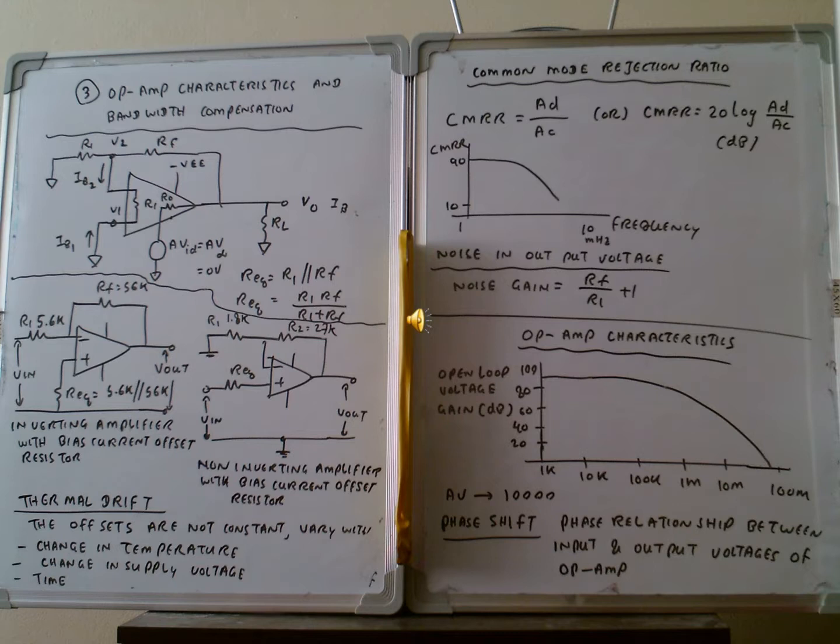The next topic is operational amplifier characteristics and bandwidth compensation. Bandwidth compensation is important when using operational amplifiers because of thermal drift. Thermal drift occurs due to electrical current and temperature changes, which produce non-linearity and distortion of the output gain. Therefore, we have to provide offset compensation of the system.